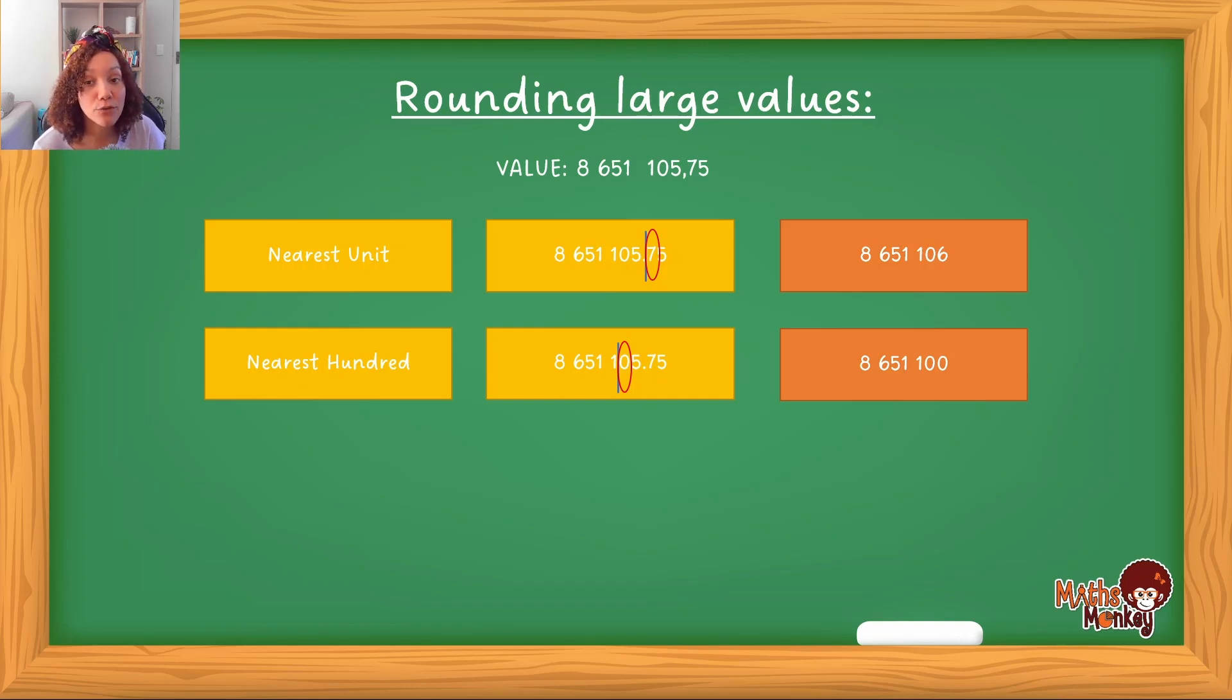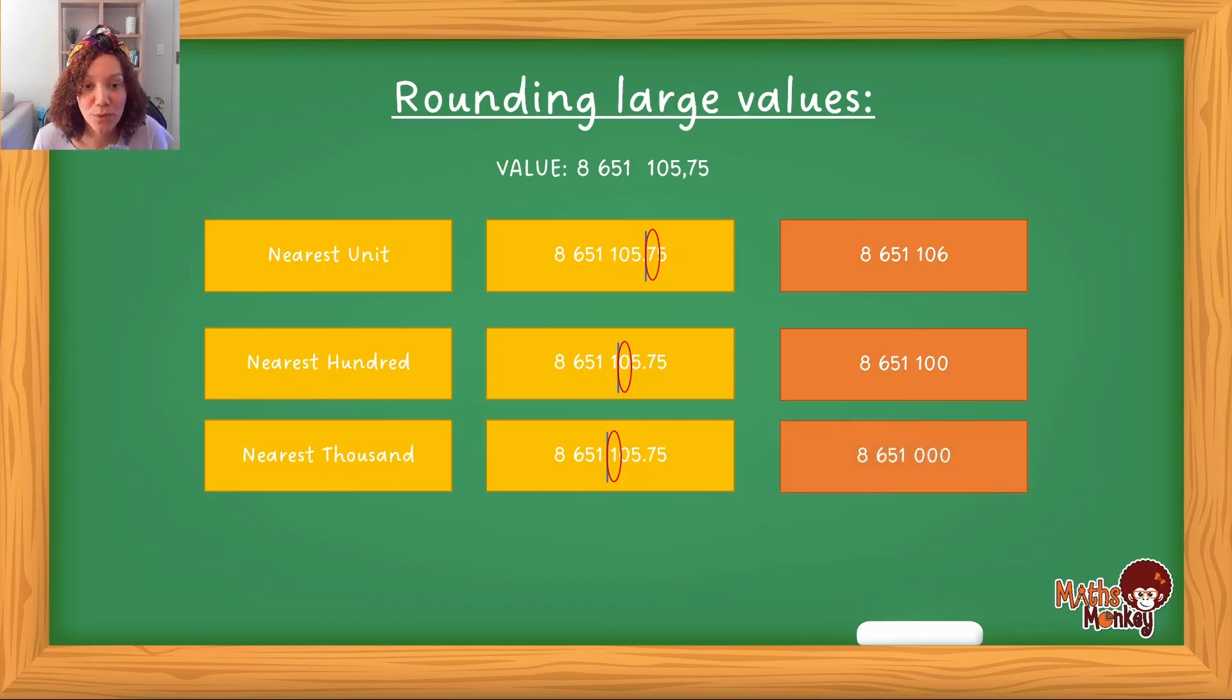Now I'm going to use the same technique and round off to the nearest thousand. Taking the same number, when I say this number, I say 8,651,000. After the first one is where I say the word thousand, and that's where I'm going to draw my line. I'm going to look at that value, and that value is less than 5, so that means that the one in front of the line will remain the same. And that's what my answer would look like: 8,651, and three zeros.